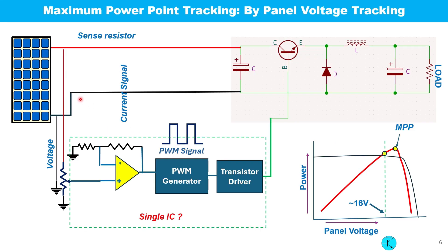Here is the basic principle of voltage tracking. Panel voltage is sensed with a potentiometer, part of which is sampled and amplified. This voltage signal is applied to a voltage-controlled PWM circuit. At the output, we get a change in duty cycle in accordance with the input voltage — the higher the voltage, the higher the duty cycle of the PWM signal. Once we set the voltage at the input, the duty cycle is automatically adjusted to track this same voltage under all circumstances.